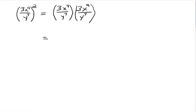So the numerator: you have 3 times 3, which is 3 squared. And then x to the 4th times x to the 4th, which is x to the 8th. And in the denominator, you have y to the 7th times y to the 7th, which is y to the 14th.